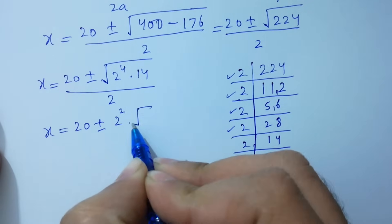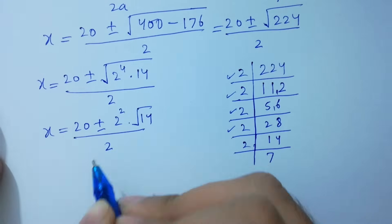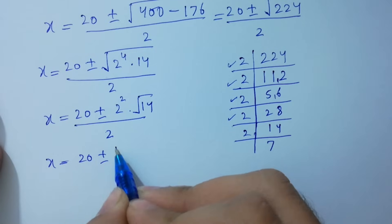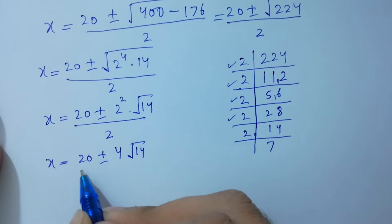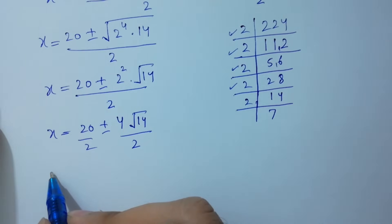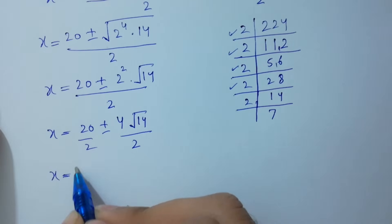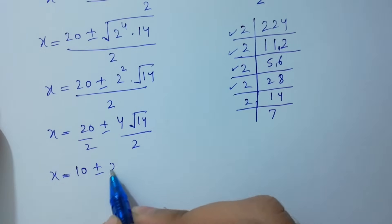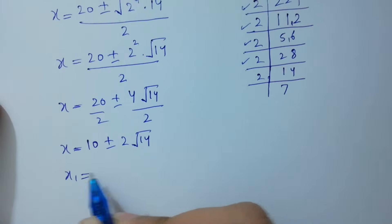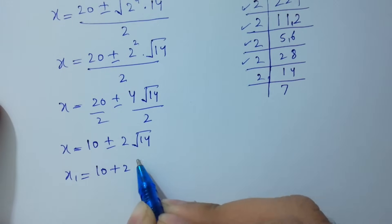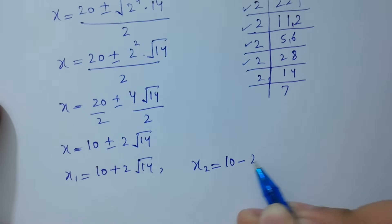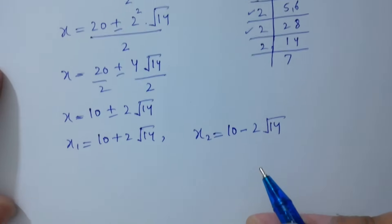Taking the square root, we have 2 squared times square root of 14, which is 4 square root of 14. So x equals (20 plus or minus 4 square root of 14) over 2, giving x equals 10 plus or minus 2 square root of 14. Therefore x1 equals 10 plus 2 square root of 14, and x2 equals 10 minus 2 square root of 14.